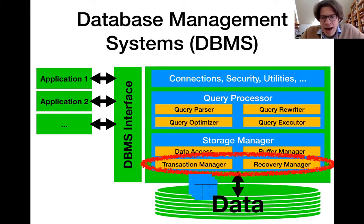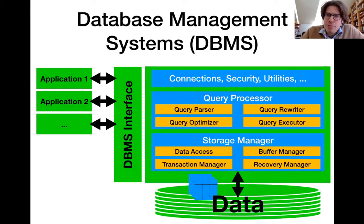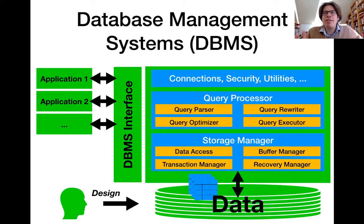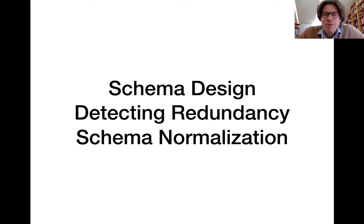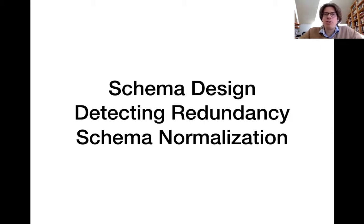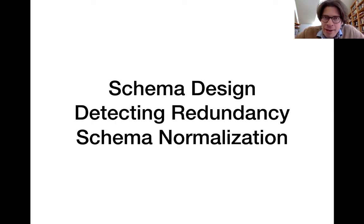After that, we're going to discuss how we can design a good database. We're going to see tools that allow you to design the schema of a database for a specific use case. We're going to see how we can detect redundancies in those schemata and how we can optimize them by normalization to at least partially get rid of that redundancy.